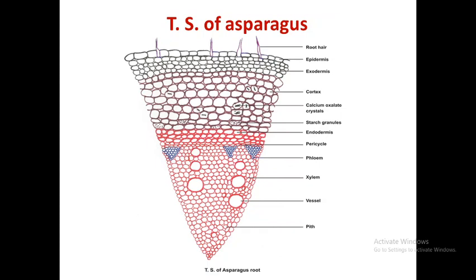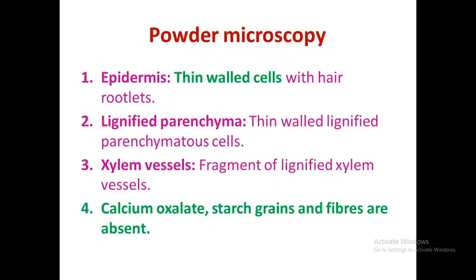To summarize, the major microscopic layers are: epidermis with root hairs, cortex, endodermis, phloem, xylem, and pits. In powder microscopy, asparagus shows thin-walled epidermal cells with hair rootlets, lignified parenchyma, lignified xylem vessels, and importantly, calcium oxalate crystals, starch grains, and fibres are present.